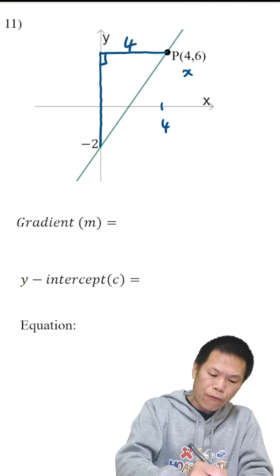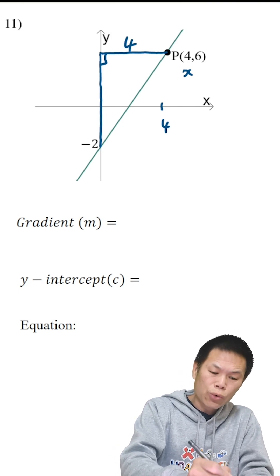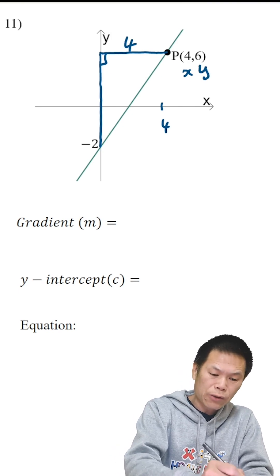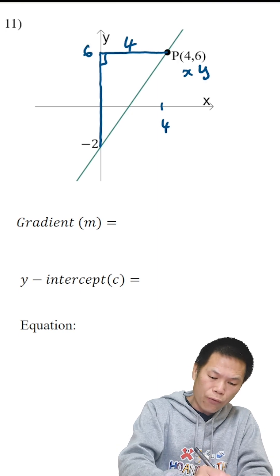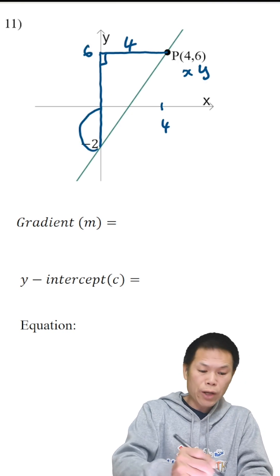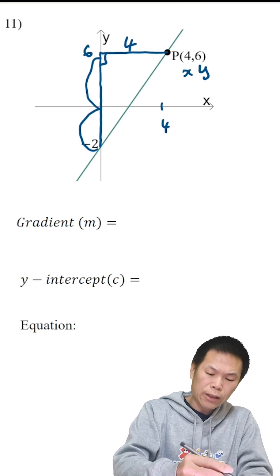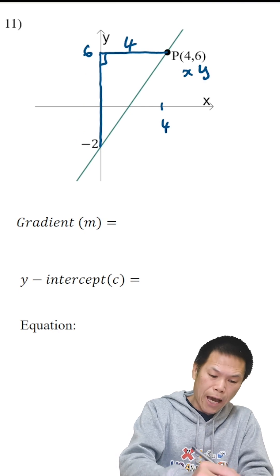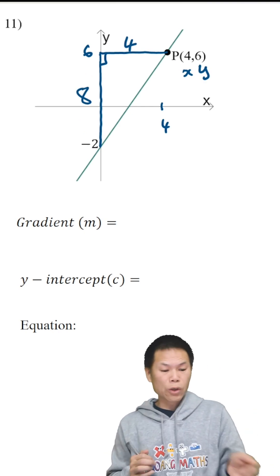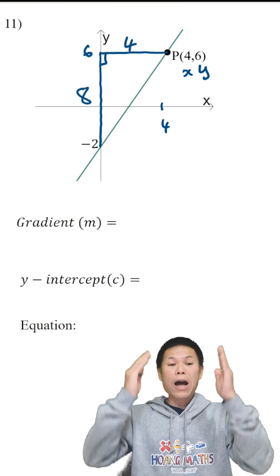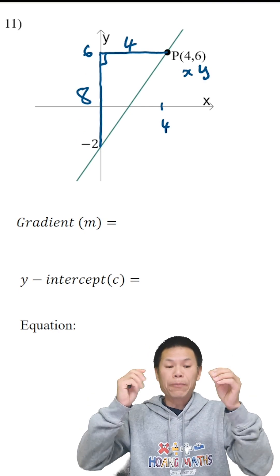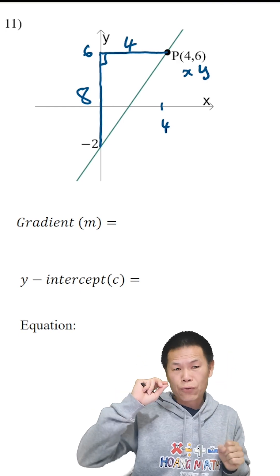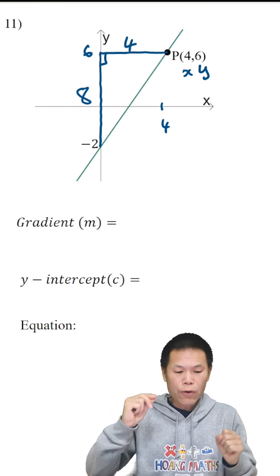And we start from negative 2 to 6 because this is the y value. So therefore, from here to here is 2 units. Another 6 units — altogether is 8. So there you go. Rise is 8. Run is 4.